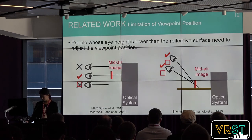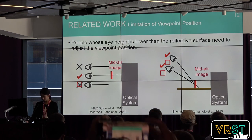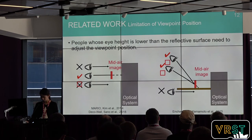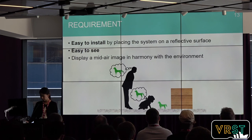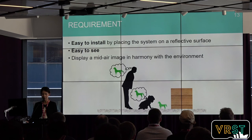Moreover, there is one more limitation: the viewpoint position. Although the limitation of viewpoint position was partially resolved, people whose eye height is lower than the reflective surface still need to adjust their viewpoint position to see the mid-air image. Therefore, we set three requirements for the proposed system: it should be easy to install by simply placing it on a reflective surface; it should be easy to see without adjusting viewpoint position; and it should display mid-air images in harmony with the environment.